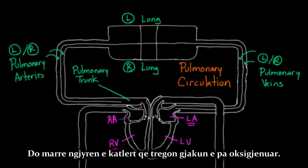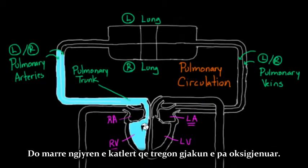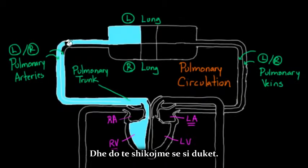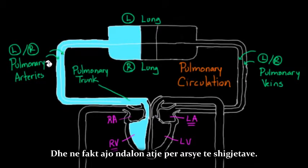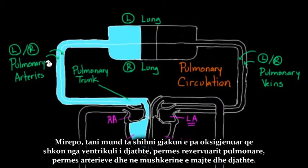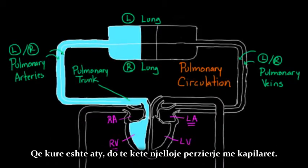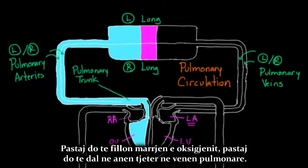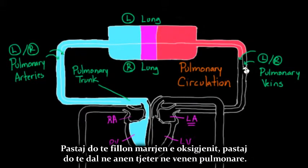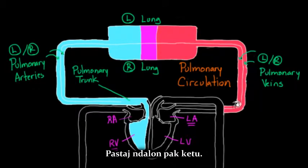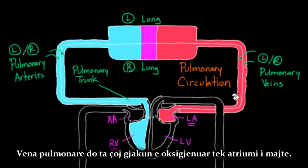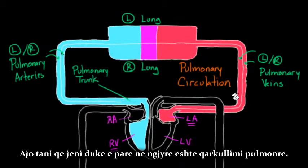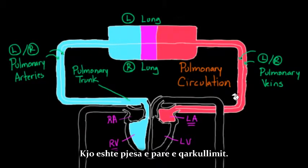This part of the journey is called the pulmonary circulation. The heart has two circuits, and we've completed the first one. Taking some blue to indicate deoxygenated blood: it goes from the right ventricle through the pulmonary trunk, through the arteries, and into the left and right lung. There it mixes with capillaries and picks up oxygen, then comes out through the pulmonary veins, delivering oxygenated blood to the left atrium. That's the pulmonary circulation — the first part of our circuit.